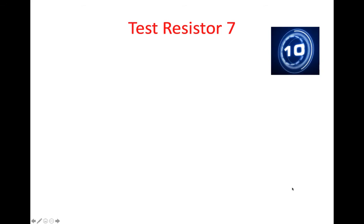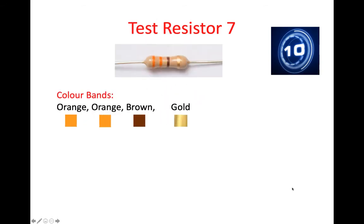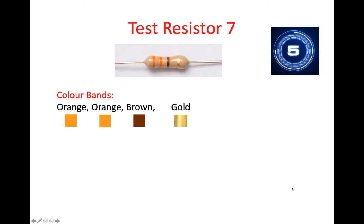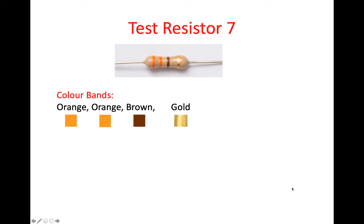Test resistor seven. Here we have orange, orange, brown, and gold. Orange has the value 3, so the first and second digit of the resistance value is both 3. Brown, the multiplier value, has a value of 1.